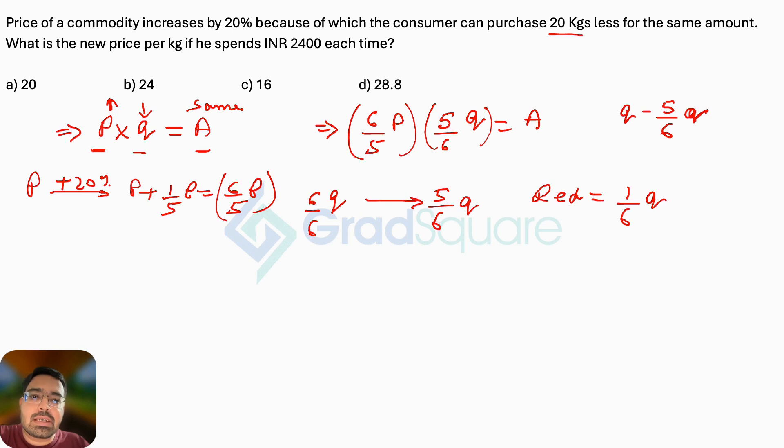And that is given to you in the question, which is 20 kgs less than the original amount. So this should be 20. The original quantity that he was purchasing will turn out to be equals to 120 kgs.